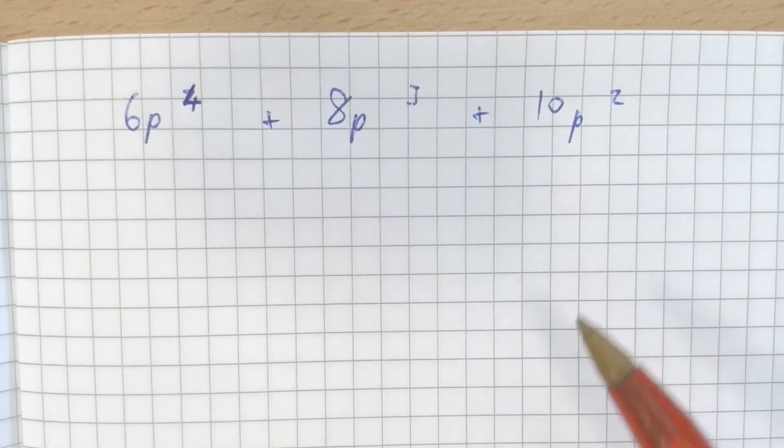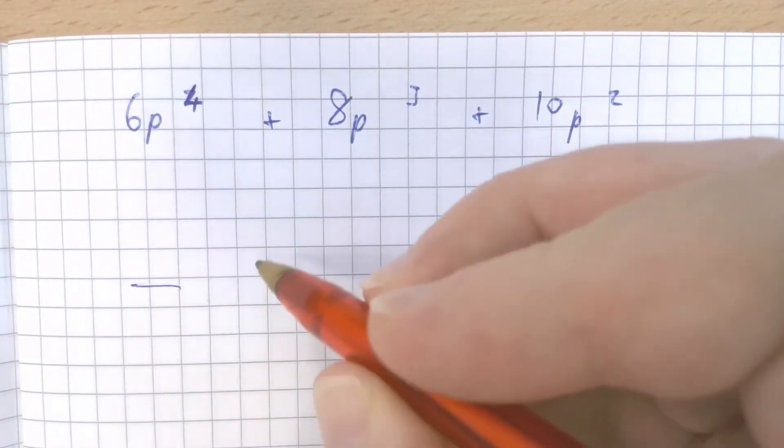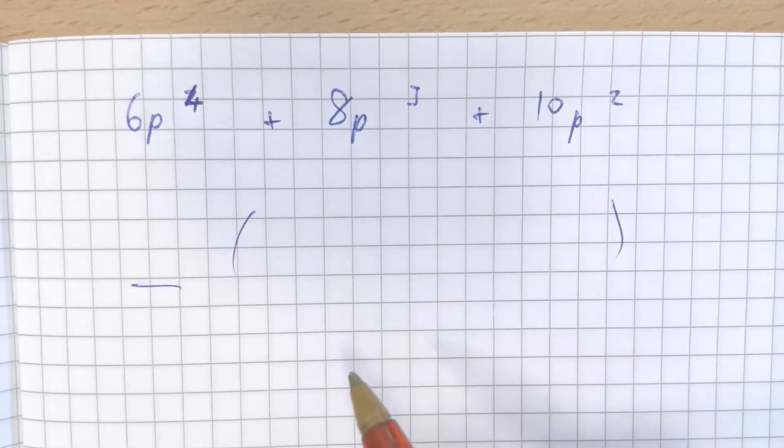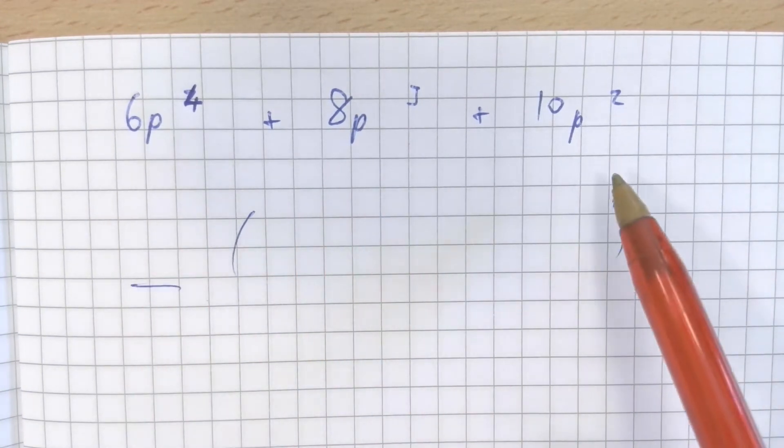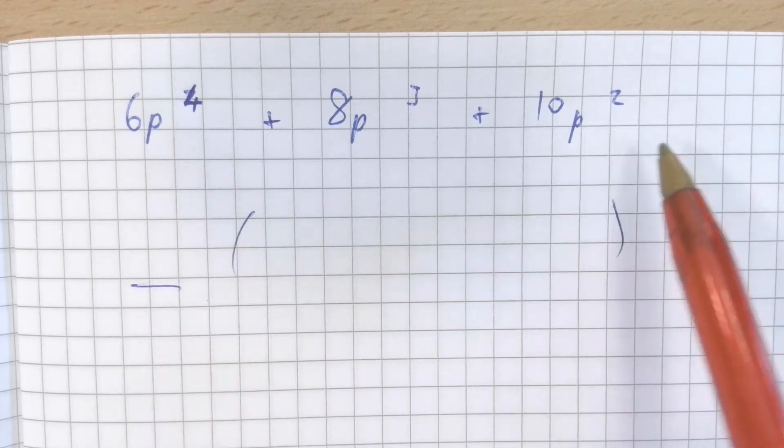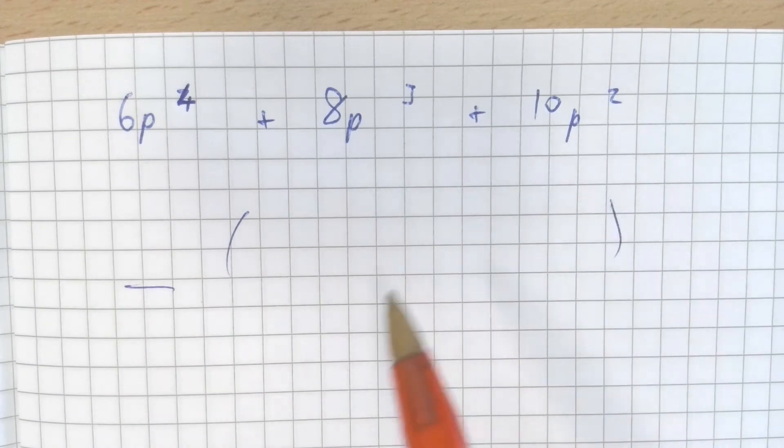If we're asked to factorize this, this means there'll be a number that goes outside the bracket and there'll be a bracket containing terms. Fully factorizing means taking out the biggest possible value out of these three. What I mean by that is, what is the highest common factor of 6, 8 and 10?